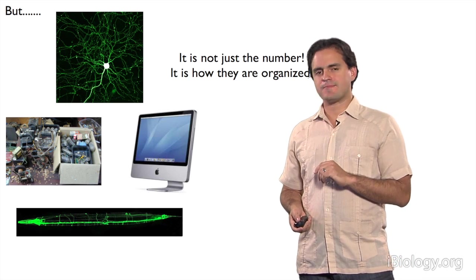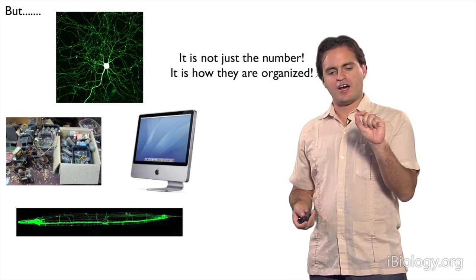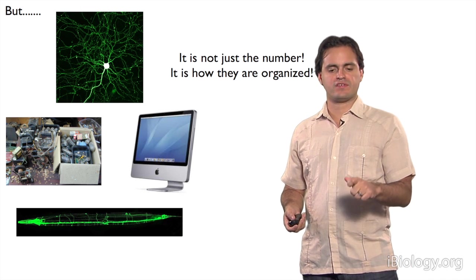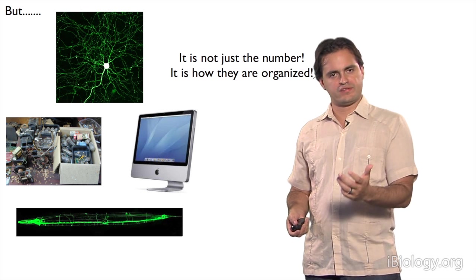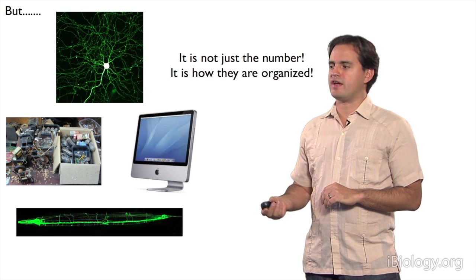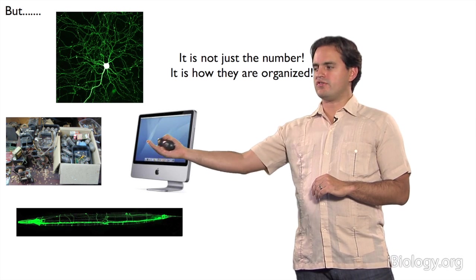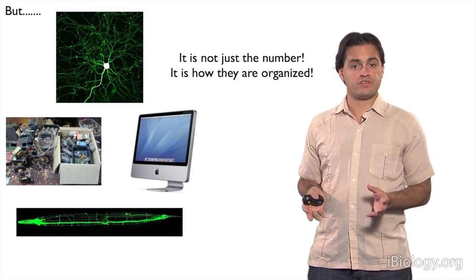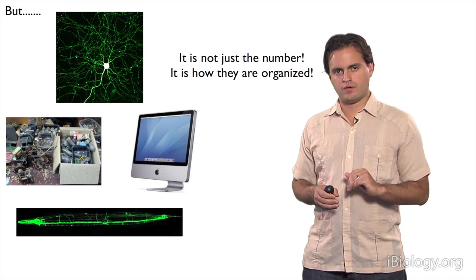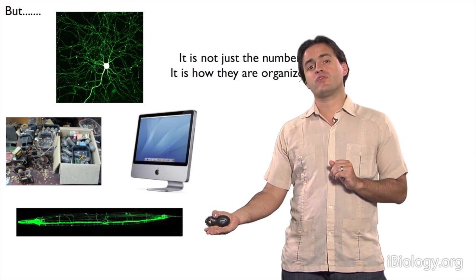One important aspect is that the number of neurons is important, but more critical than the number of neurons is how they're organized. Much like having a bunch of cables does not make a computer, having a bunch of neurons that are disorganized does not make a nervous system. They have to be organized in a particular way. And again, I want to bring as an example C. elegans.